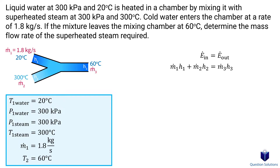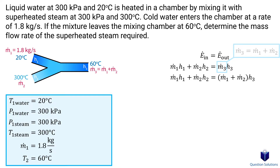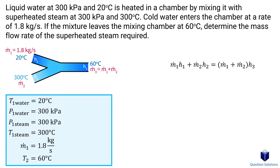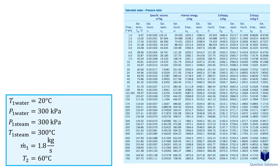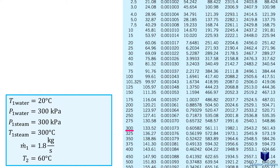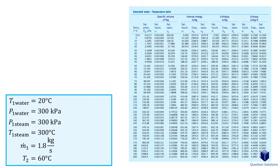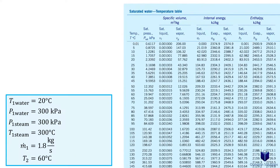There are two entrances and one exit, so the mass flow of the two entrances must equal the mass flow of the exit — we replace mass flow 3 with that sum. Next, we figure out the enthalpy values from temperature tables. For the first enthalpy value, the pressure is 300 kPa and the temperature is 20 degrees Celsius. The saturation temperature at 300 kPa is 133 degrees Celsius — our temperature is lower, so this is a compressed liquid. For compressed liquids, we find enthalpy by treating it as a saturated liquid at the given temperature.